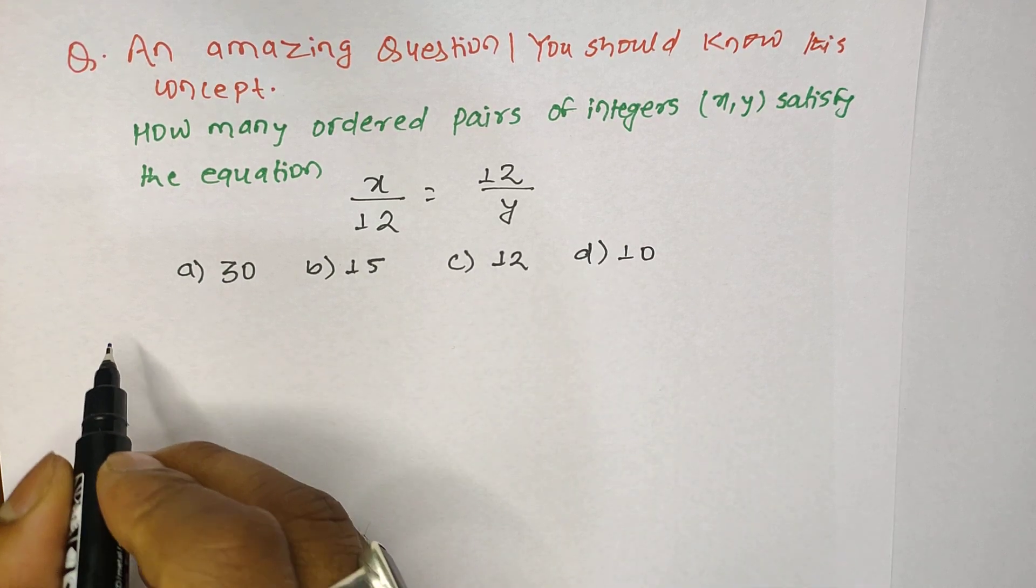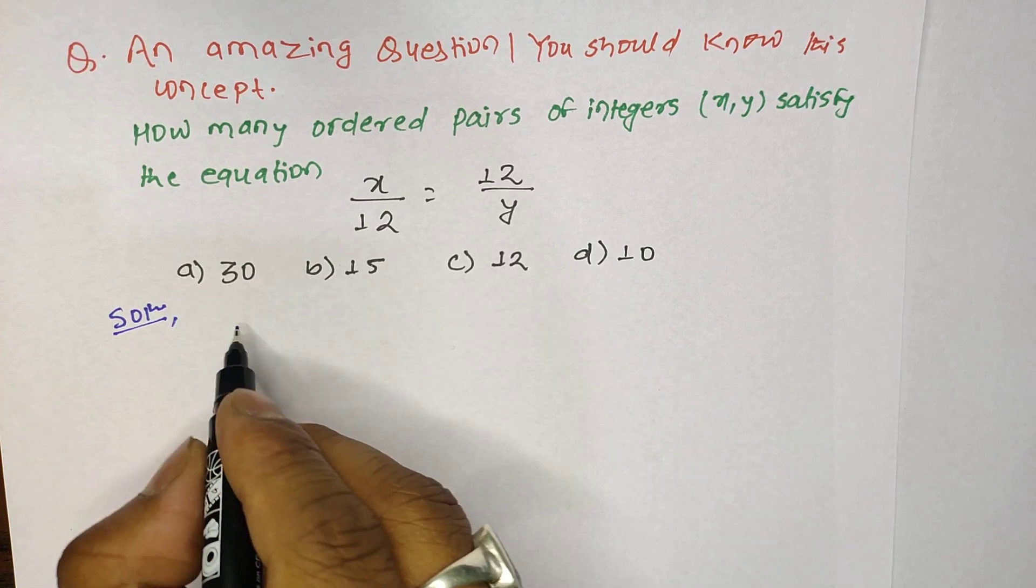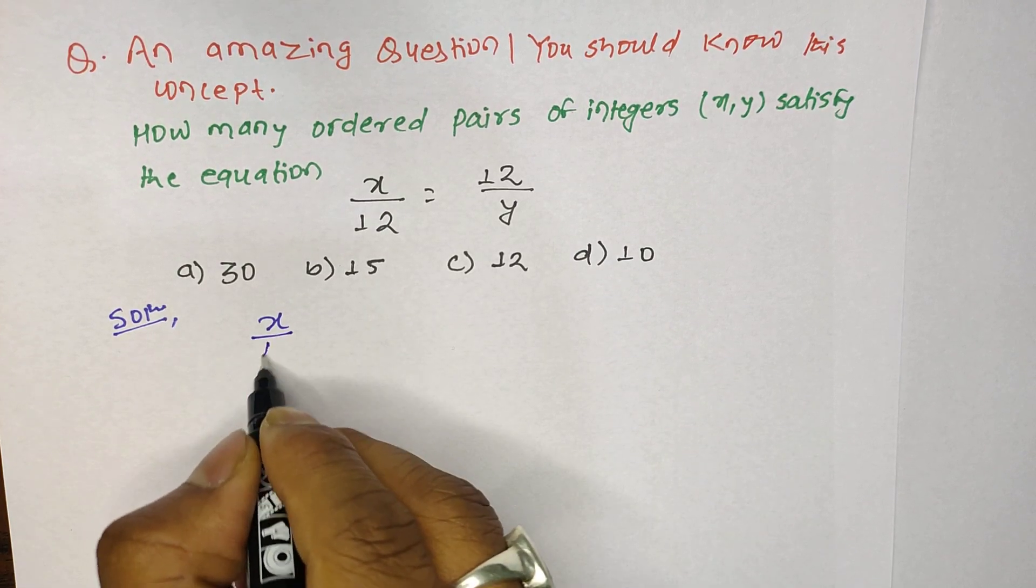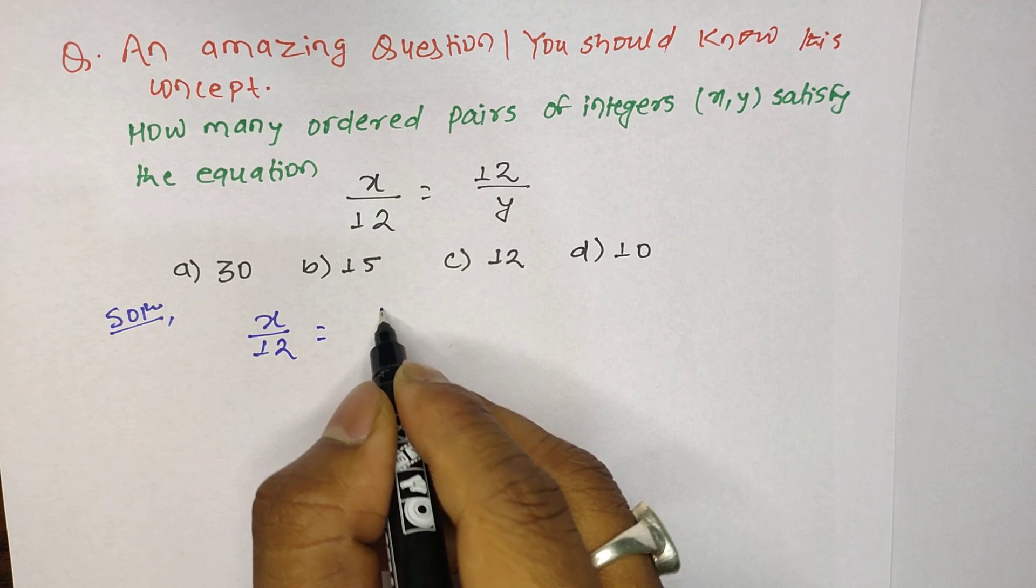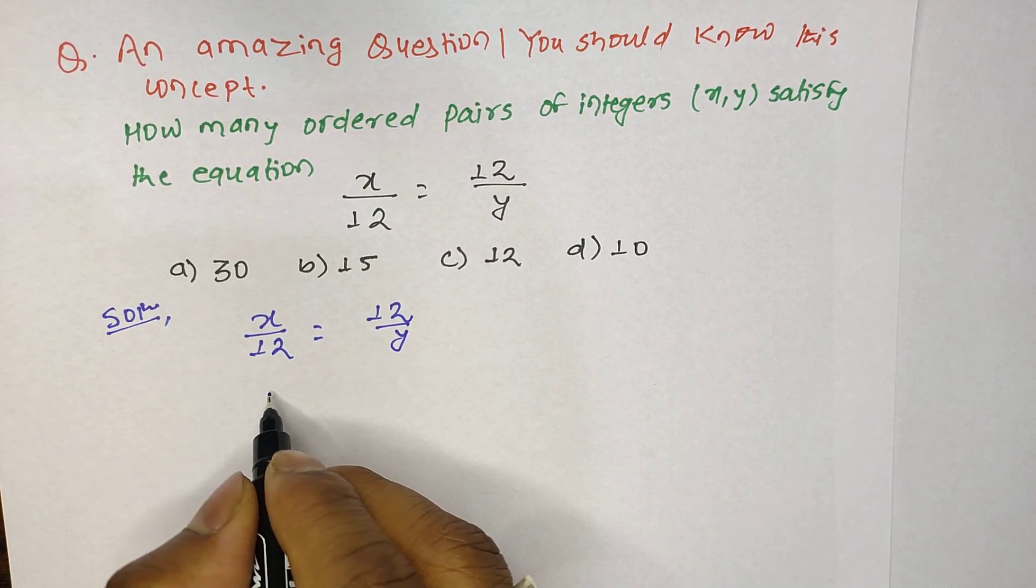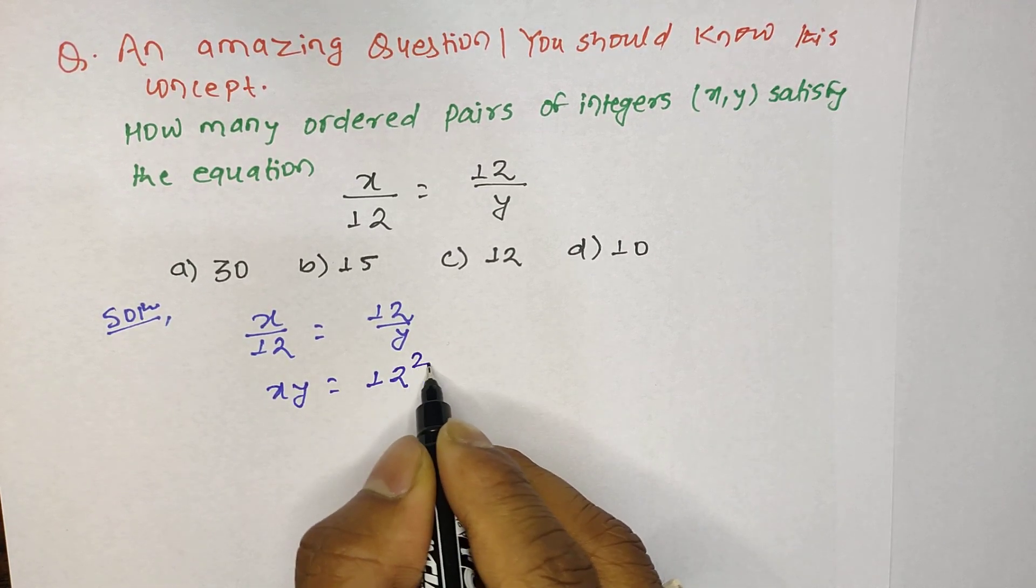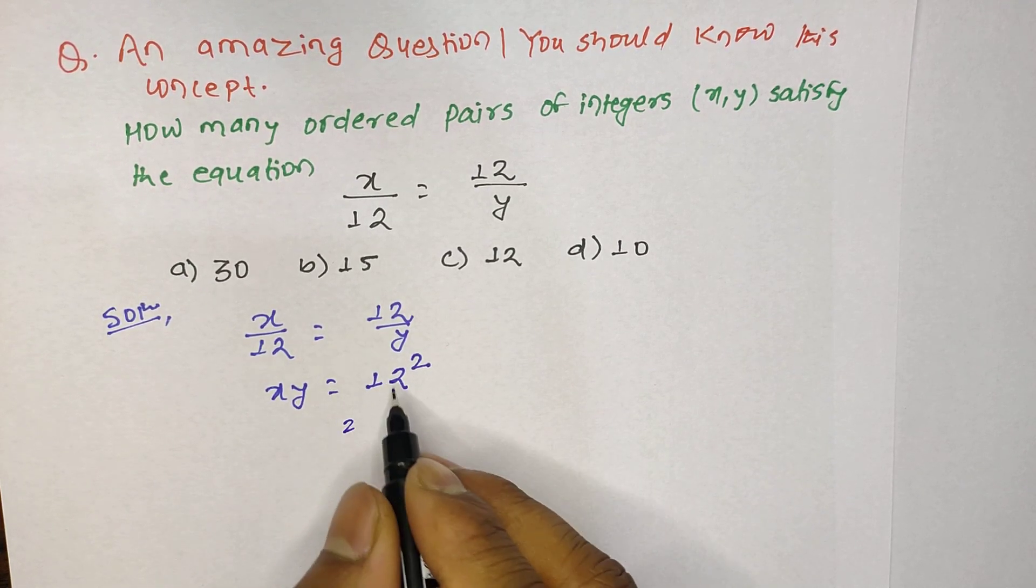So let's dive into the equation and find the solution. Our given equation is x by 12 equals 12 by y. Here we can cross multiply, so x times y equals 12 times 12.